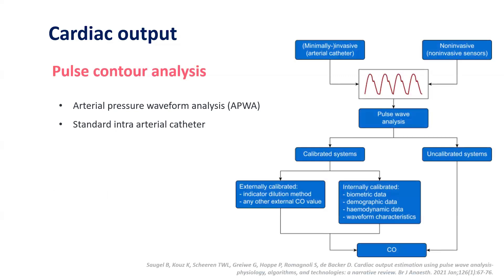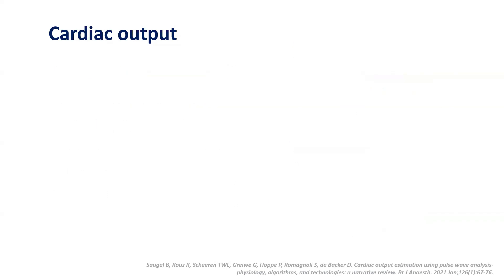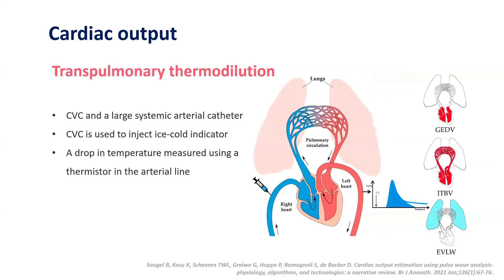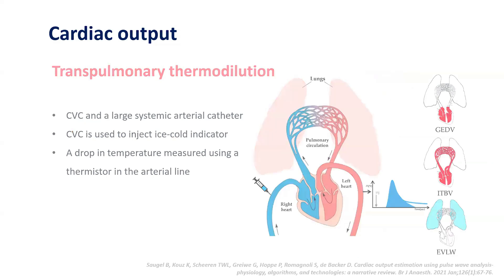Pulse contour analysis involves arterial pressure waveform analysis with a standard intra-arterial catheter. The pulse wave is analyzed by different calibrated or uncalibrated systems to give cardiac output. In transpulmonary thermodilution, a central venous catheter and a large systemic arterial catheter are placed simultaneously. Ice-cold saline is injected through the central venous catheter, and the drop in temperature is measured using a thermistor in the arterial line to determine cardiac output.